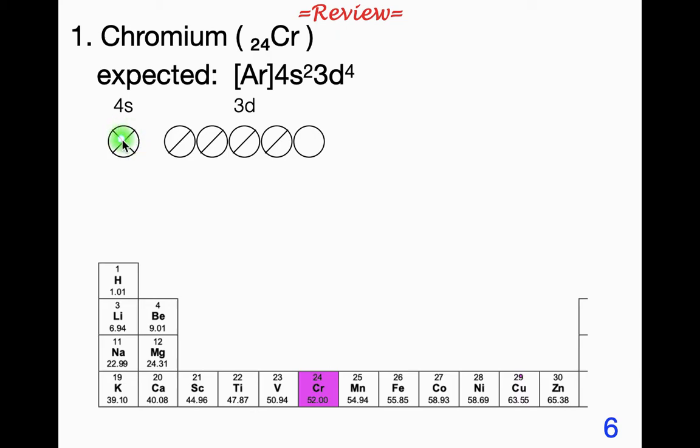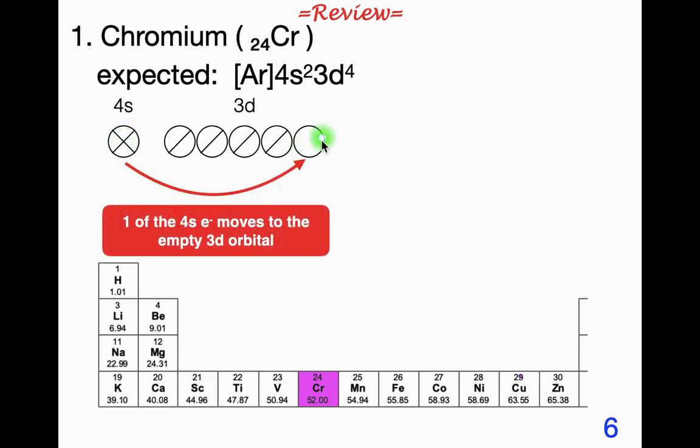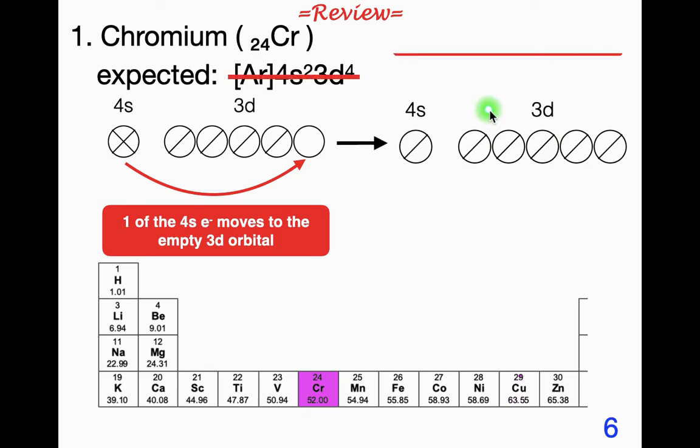So what we find is rather than this, which would be the orbital diagram for that, one of the 4s electrons is actually found in the empty, what we would expect to be the empty d orbital. So one of the 4s electrons seems to have moved over here, which means that this is the actual orbital diagram and this is the actual electron configuration.